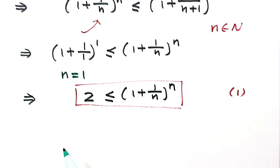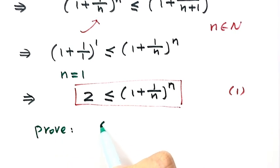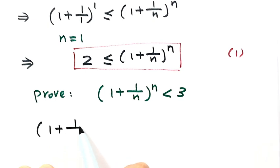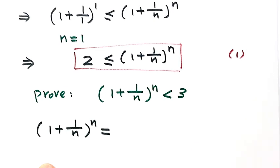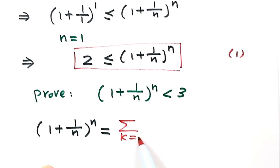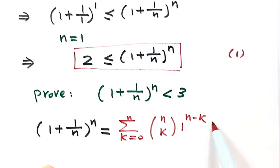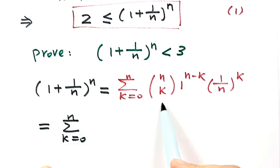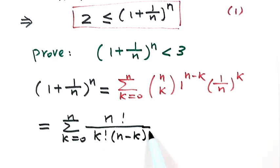Now let's prove the second part: (1 + 1/n)^n < 3. We're going to use the binomial formula. Expanding (1 + 1/n)^n gives the sum from k=0 to n of C(n,k) times 1^(n-k) times (1/n)^k. Writing out C(n,k) explicitly: n! divided by (k! times (n-k)!), then times (1/n)^k.